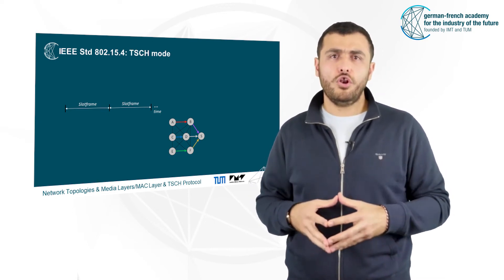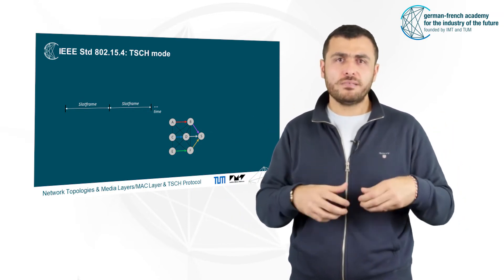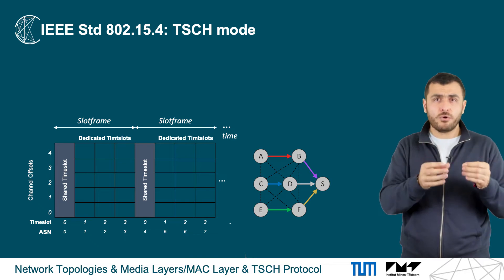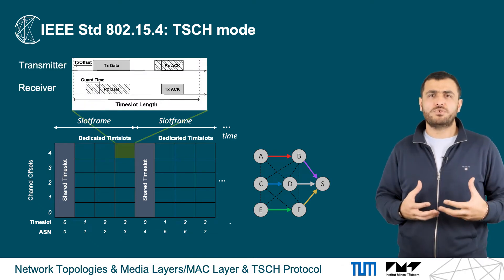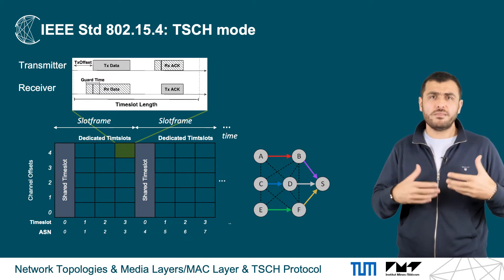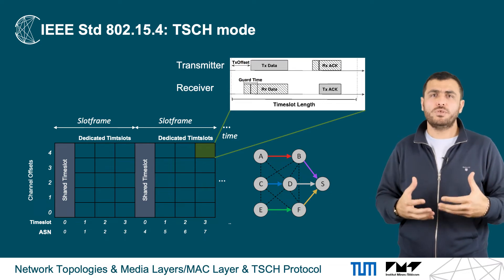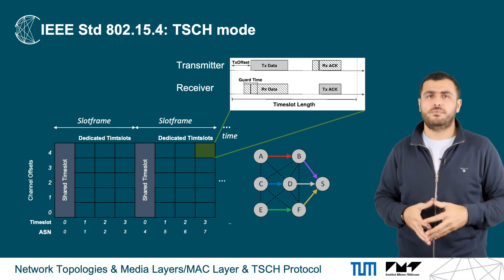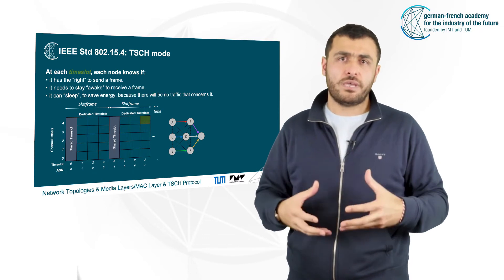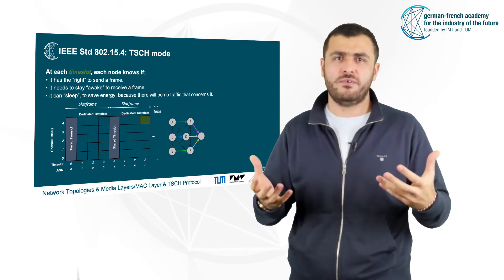In a TSCH network, all nodes continuously synchronize themselves on a periodic slot frame. This slot frame repeats in time for the whole duration of the network and divides time into slots of equal length. In each time slot, there is enough time to transmit a frame and receive its acknowledgement. If the acknowledgement is not received within the slot duration, the transmission is considered failed and retransmission is postponed to the next available dedicated time slot. Each node knows whether it should send, stay awake to receive, or sleep to save energy.